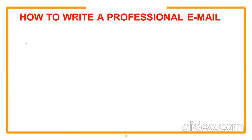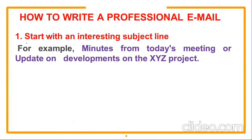Now, how to write a professional email — we need to understand some important guidelines. Number one: start with an interesting subject line. The subject line is a short message displayed before the contents of the email, which is visible in the inbox. It summarizes the intention of your email in usually seven to eight words. A subject line helps the recipient to quickly identify your email in the inbox. For example, the subject line can be like: 'Minutes from today's meeting' or 'Update on developments on so-and-so project' — very catchy and very brief — and this subject line will reflect in your email inbox.